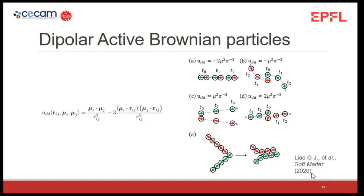The question is whether activity favors the formation of chains — specifically the head-to-tail configuration over the side-by-side configuration. Chains form because of dipolar interactions. What Savine and Gujun claim is that when you add activity to a passive system of dipolar particles, activity does not destroy chain formation; particles forming chains can now self-propel collectively. But the chain formation mechanism itself is due to dipolar interactions — in a pure ABP system without dipolar interactions, no chain formation is observed.